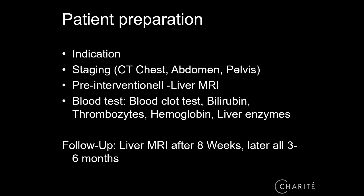Before treating patients, we need a strong indication: a low number of metastases or primary or secondary tumors within the liver, and no major extrahepatic disease. We require a baseline interventional MRI and blood tests including clotting tests, bilirubin, thrombocytes, and hemoglobin levels. After ablation, patients return for follow-up with a first MRI at six to eight weeks, where we see the maximum radiation effect as a function loss with no liver contrast uptake. Thereafter, MRIs are done every three to six months to monitor for local recurrence.